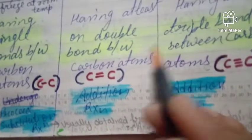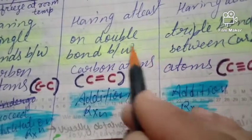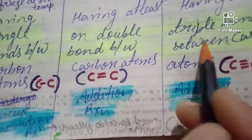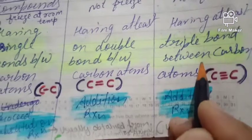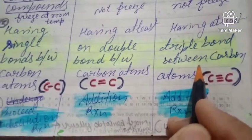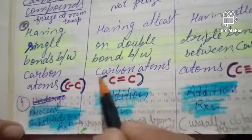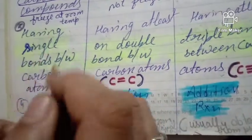Saturated hydrocarbons are usually obtained from fossilized plants and animal material, but unsaturated hydrocarbons are usually obtained from plants. This means vegetable oils are an example of unsaturated hydrocarbons.